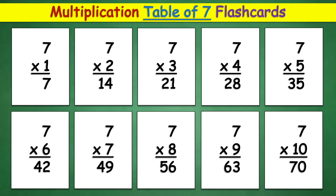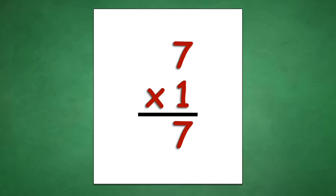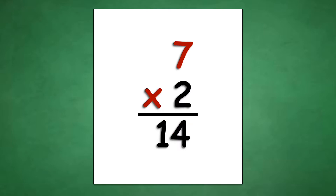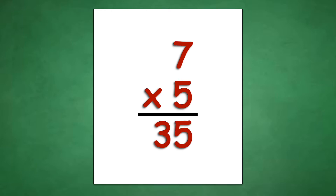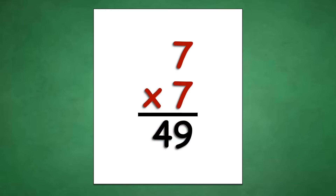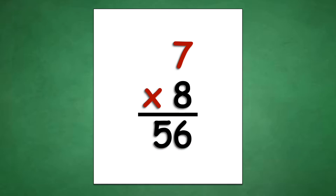Table of 7: 7 times 1 equals 7, 7 times 2 equals 14, 7 times 3 equals 21, 7 times 4 equals 28, 7 times 5 equals 35, 7 times 6 equals 42, 7 times 7 equals 49, 7 times 8 equals 56.